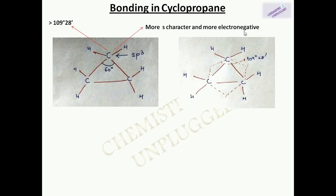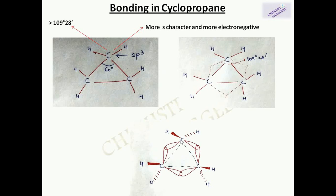The C–H bond opens up to an angle greater than 109°28', giving it more s character, which makes the C–H bond more electronegative in nature. In the orbital diagram of cyclopropane, the sp3 hybrid orbitals between carbon atoms are not along the internuclear axis but lie above it, forming a bent bond — a banana bond. Since the C–C–C bond angle is less than 109°28', the C–C bonds have more p character, sometimes described as sp4 or sp5 hybridization.